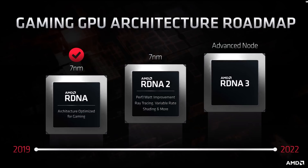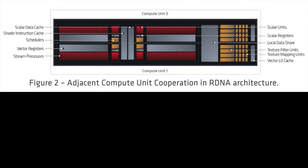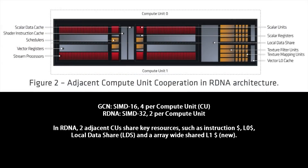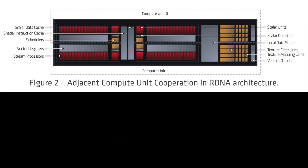In order to better understand RDNA 2, we should take a look at some of the key changes in RDNA 1 as the foundation graphics architecture that AMD will iterate upon for many years to come. The fundamental change in RDNA is to move to a SIM32 dual compute unit design that shares an instruction cache, a larger L0 cache, a local data share or LDS, and a new L1 cache shared across many CUs. With RDNA, each CU has effectively double the instruction cache available.